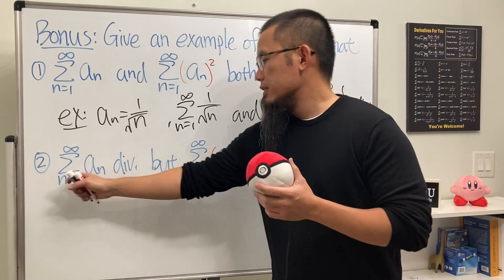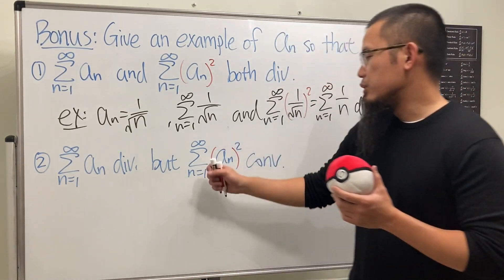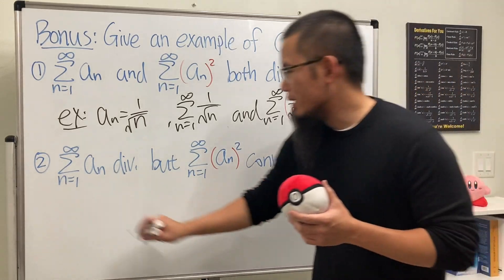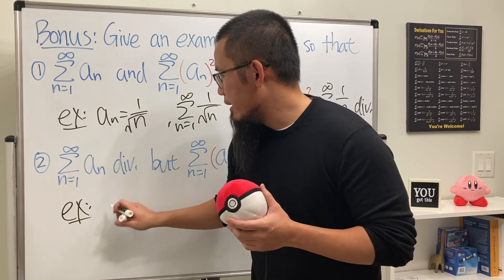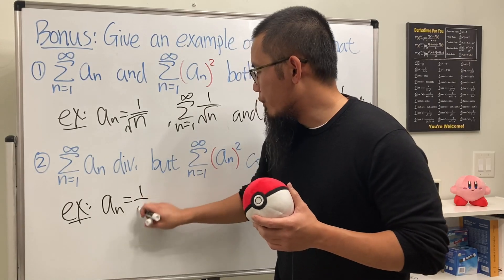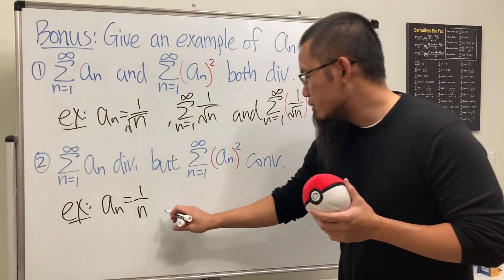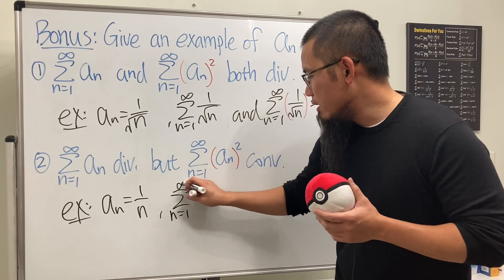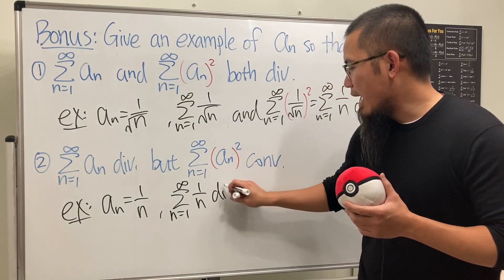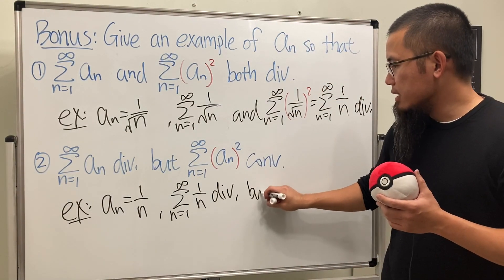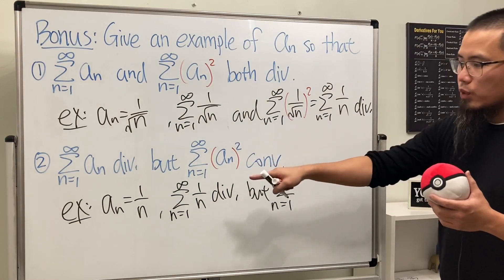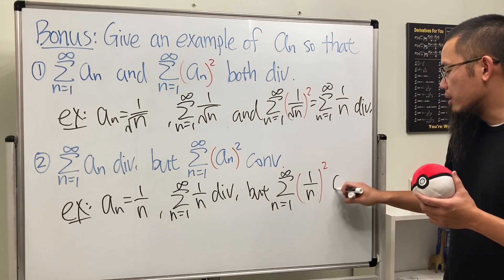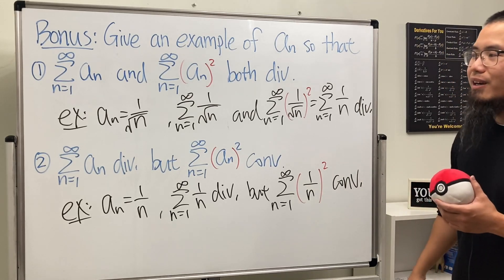For the second bonus: is it possible for the series of aₙ to diverge while the series of aₙ² converges? The answer is yes. Take aₙ to be one over n. The series of one over n diverges, but when we square that, p becomes two, so the series of one over n² actually converges.